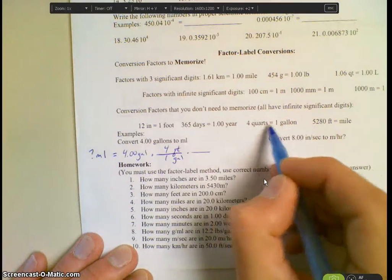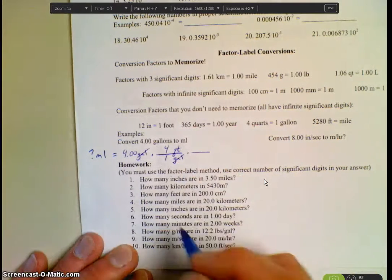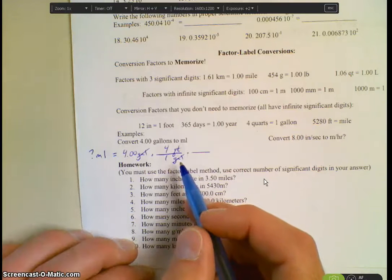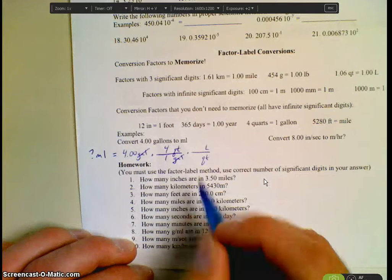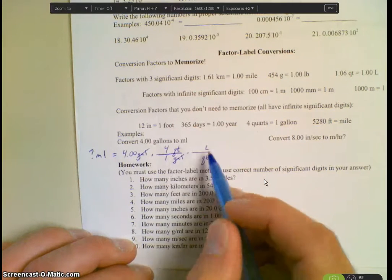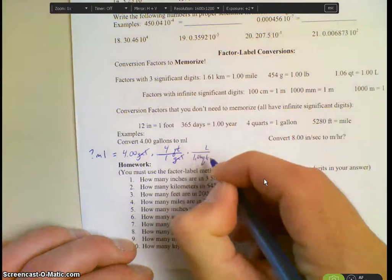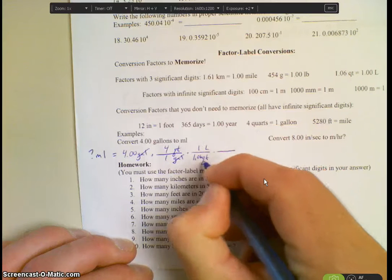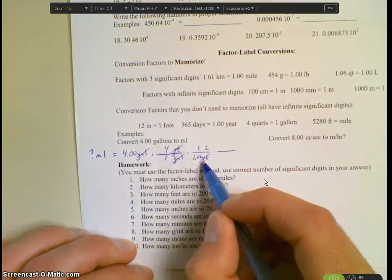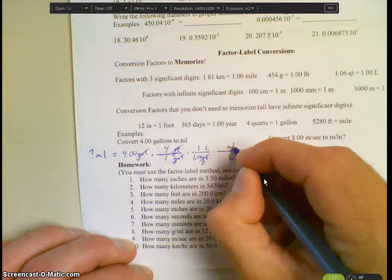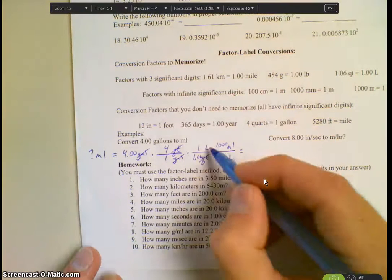I'm just using this conversion factor here and setting it up. Again, gallons divided by gallons, they cancel unit-wise. So now I'm left with quarts. What can I convert quarts to? To liters. Good. So quarts to liters. So quarts goes on the bottom so it cancels the unit on top. And what's my conversion factor for that? There are 1.06 quarts for every one liter. And then I'm going to convert. And again, units cancel, quarts and quarts. And then I'm in liters, but I want milliliters. And there are a thousand milliliters in a liter. And then your liter units cancel.